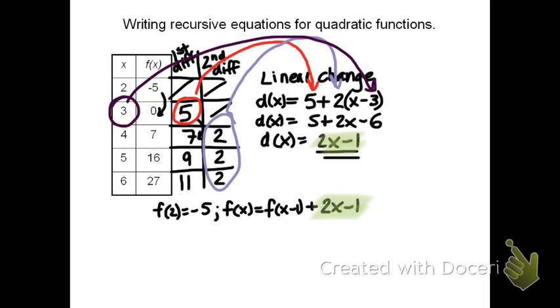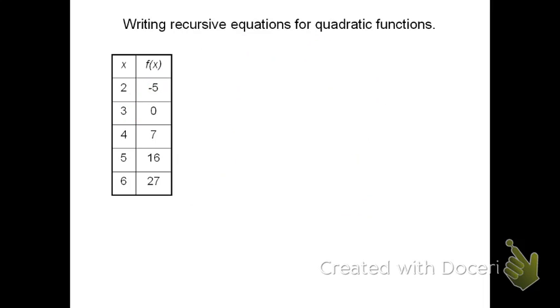Now, let's look at a little bit harder example. So, let me bring up another example here. For this one, we're going to go ahead and we're going to write the recursive equation again. But to do it, we are again going to have to increase our table to include the first and second differences.